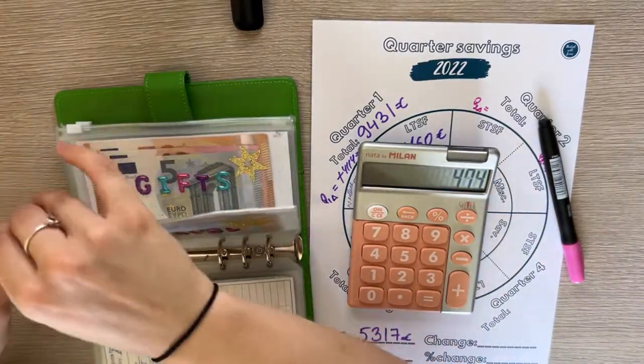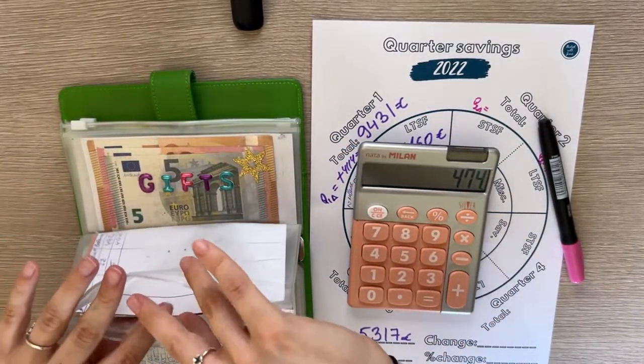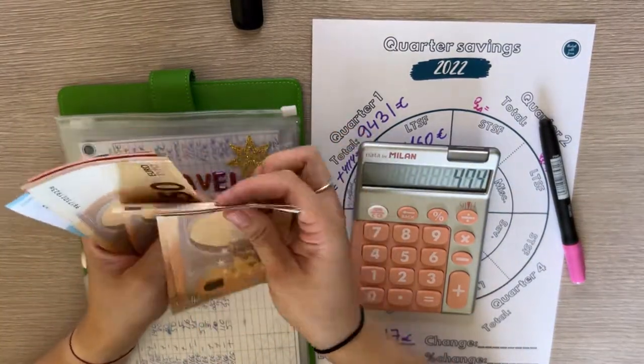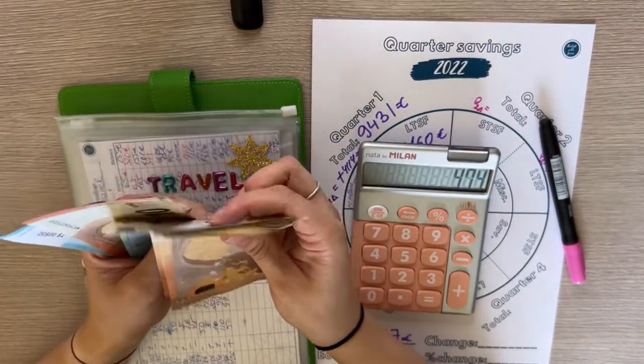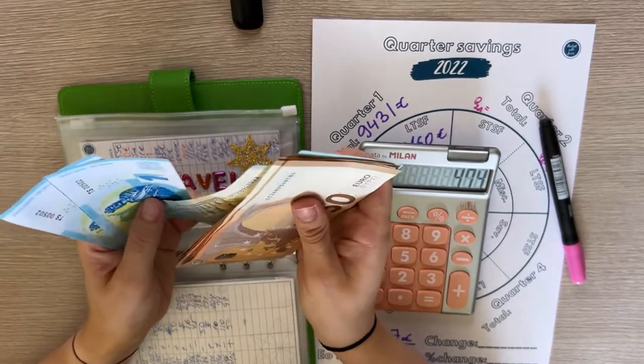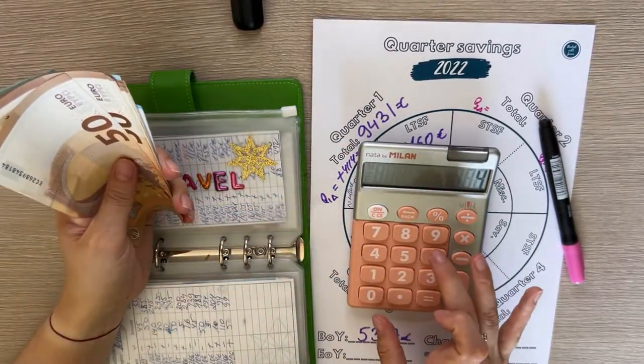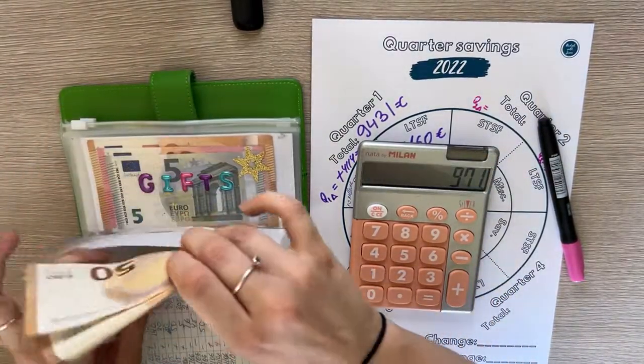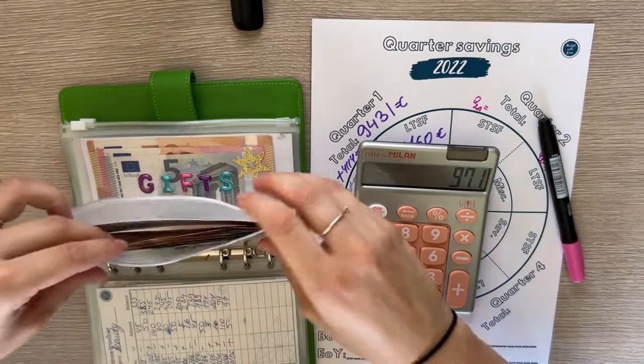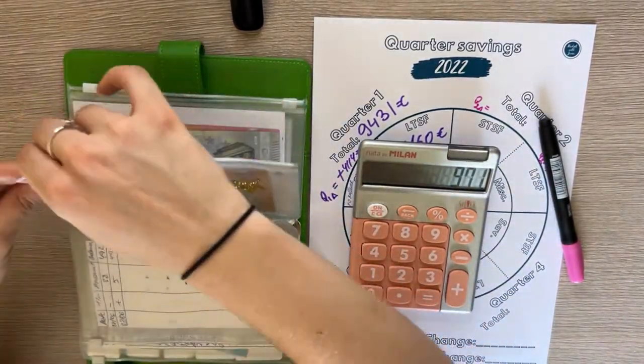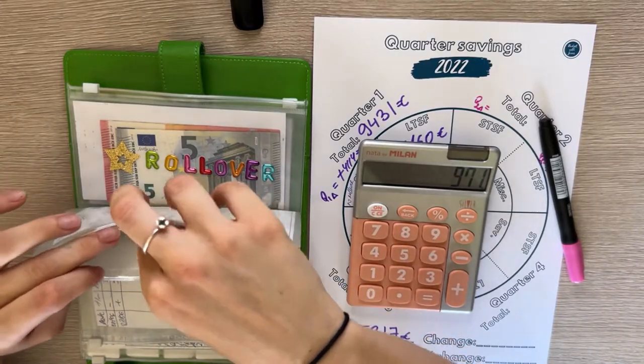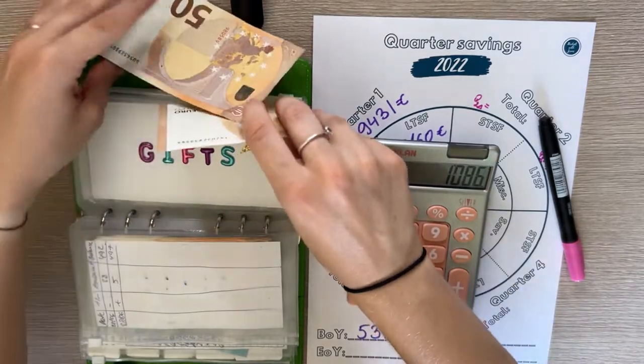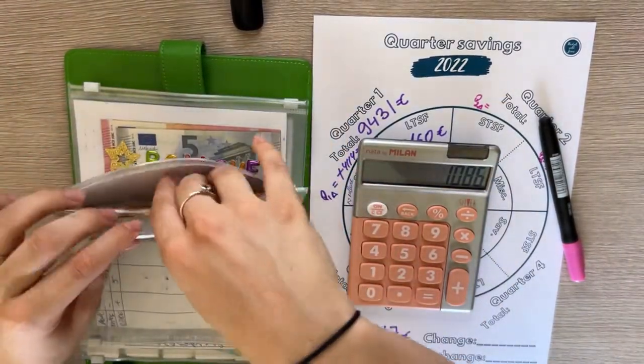Next is travel, and travel has 497. Then we have gifts with 115. So we already hit the 1,000 mark which is great. Fun has 45.